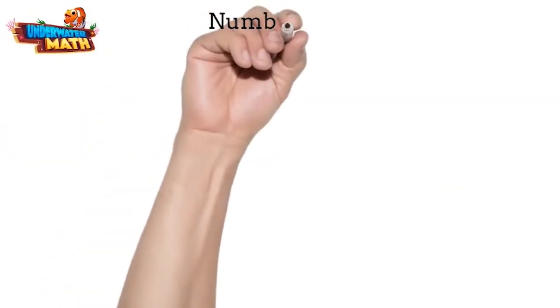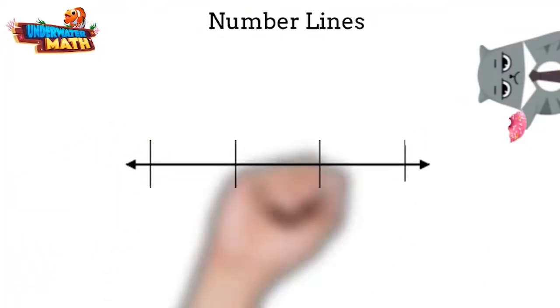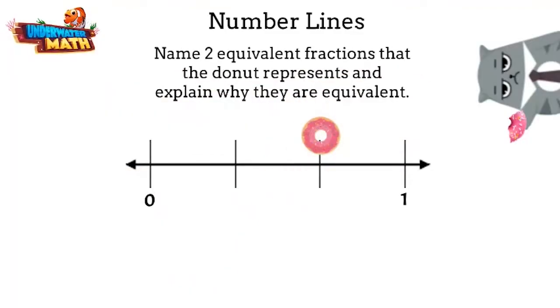You're getting it. But what if we are looking at number lines instead of models? I'm running out of donut over here. Let's do it together. Name two equivalent fractions that the donut represents and explain why they are equivalent.